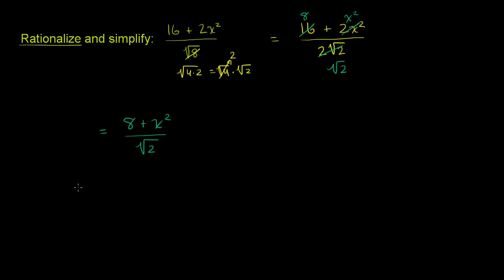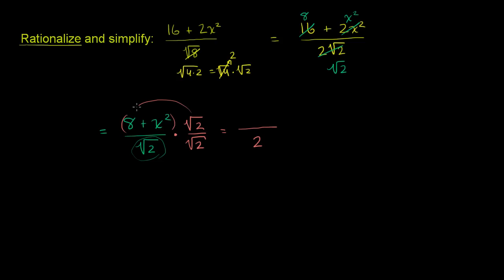Now let's rationalize this. The best way to get this radical out of the denominator is to multiply the numerator and the denominator by the principal square root of 2. So times the principal square root of 2 over the principal square root of 2. In the denominator, the square root of 2 times the square root of 2 is just 2. And in the numerator, we distribute: 8 times the principal square root of 2, plus the square root of 2 times x squared.